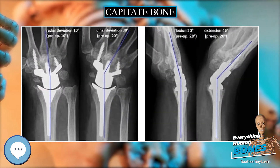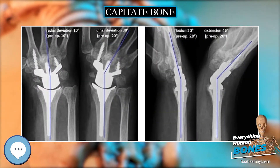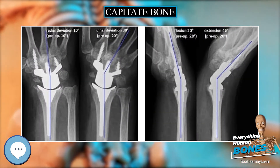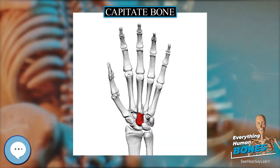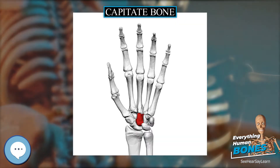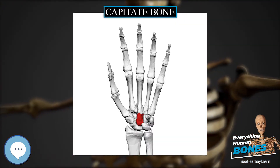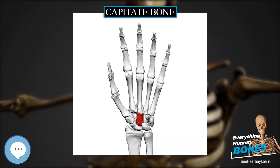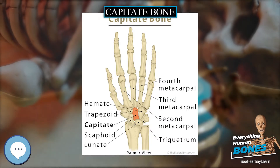Above this is a deep, rough groove, forming part of the neck, and serving for the attachment of ligaments. It is bounded superiorly by a smooth, convex surface, for articulation with the scaphoid bone.